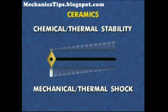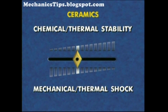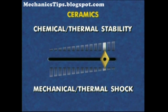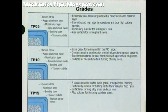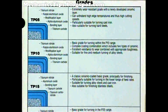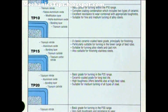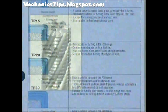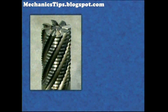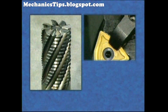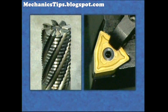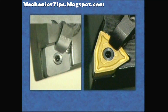For example, materials with excellent chemical and thermal stability, such as ceramics, tend to be brittle, with limited resistance to mechanical and thermal shock. These variable properties take place both within a material class, such as different grades of carbide, as well as when comparing different classes of tool materials, such as high-speed steel and carbide, or carbide and ceramics.